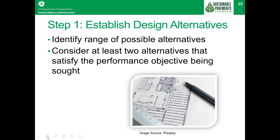Step 1: establishing design alternatives. The first step in the LCCA process is to establish the design alternatives to be compared. You need to identify a range of possible alternatives — asphalt versus concrete or rehabilitation versus reconstruction. You need to consider at least two alternatives that satisfy the performance objectives being sought. These alternatives need to have the same analysis period — this is very key, the same analysis period must be used for all alternatives being considered.